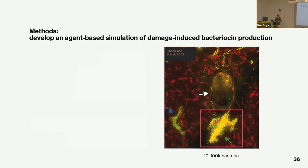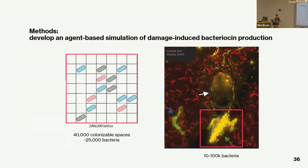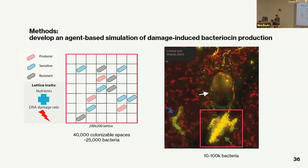I'm thinking about that 10 to 100,000 cell aggregate at the base of a trichome. The model takes place in a 200 by 200 lattice, each cell holding a single bacterial cell — about 25,000 bacteria total. The lattice has nutrients and a constant DNA damage rate. I'm looking at three populations: a producing population, a population 100% sensitive to the bacteriocin, and a population 100% resistant to the bacteriocin.